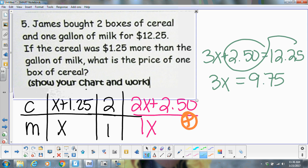And then divide by 3, and your answer is $3.25 for a gallon of milk. And it asks for cereal, so you have to add your $1.25 to that, making your cereal $4.50.